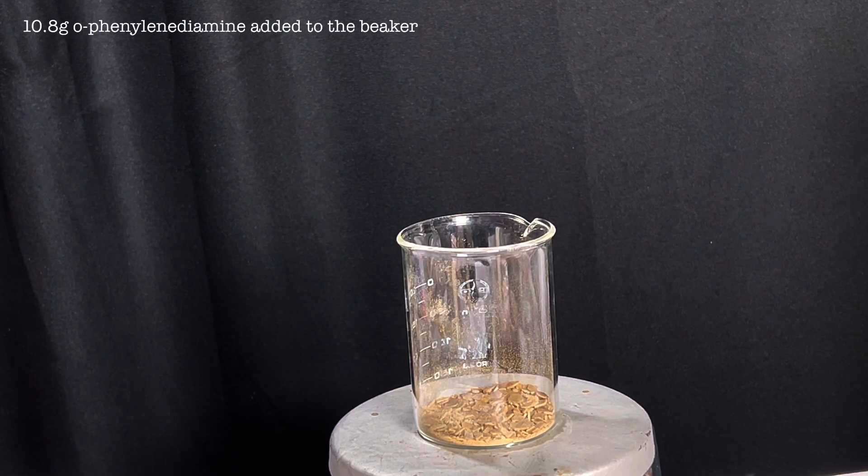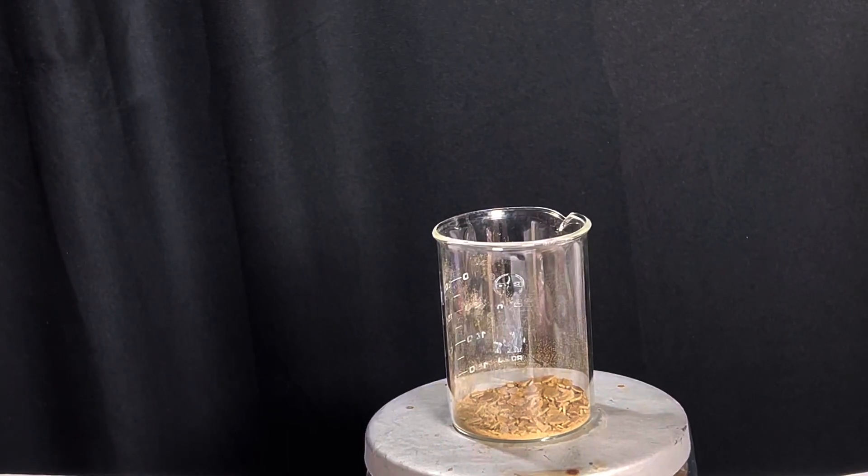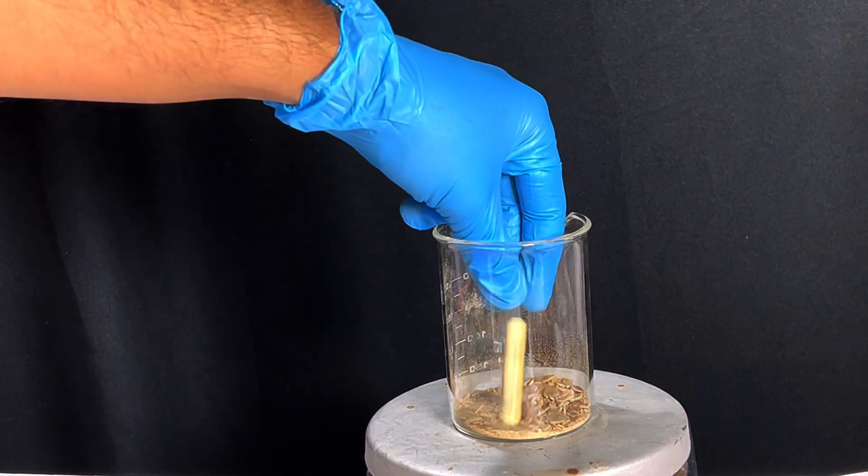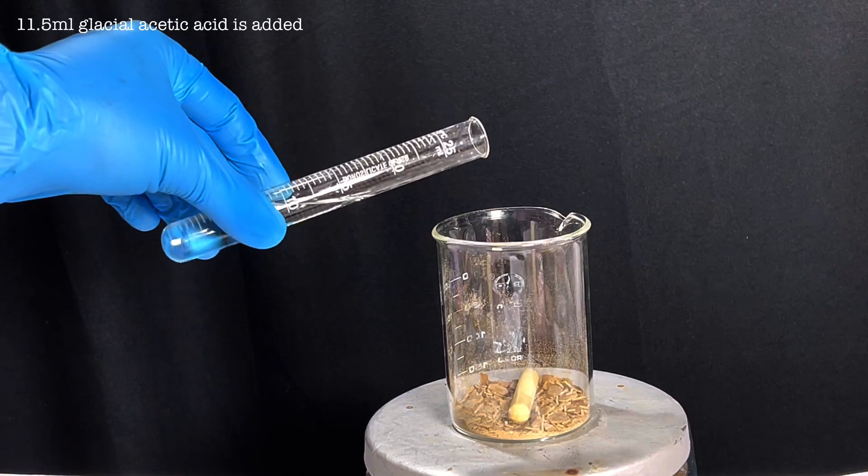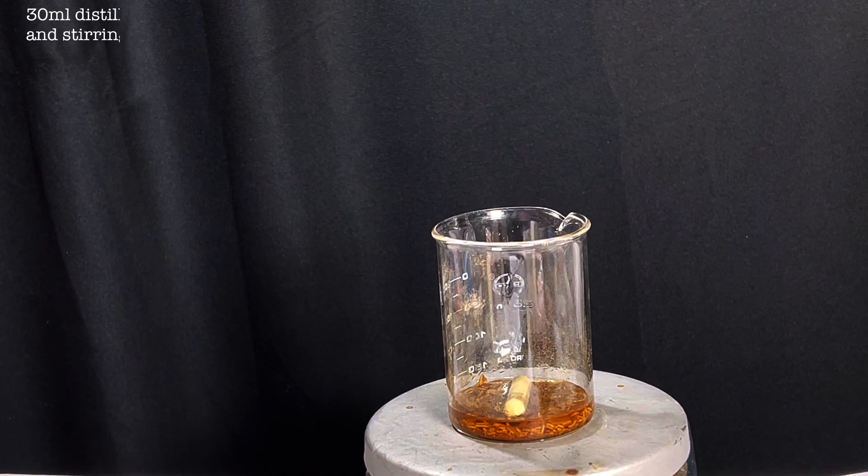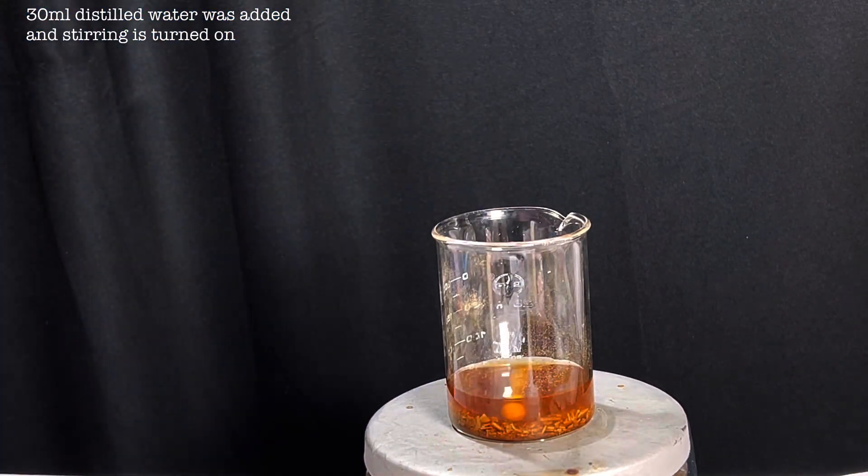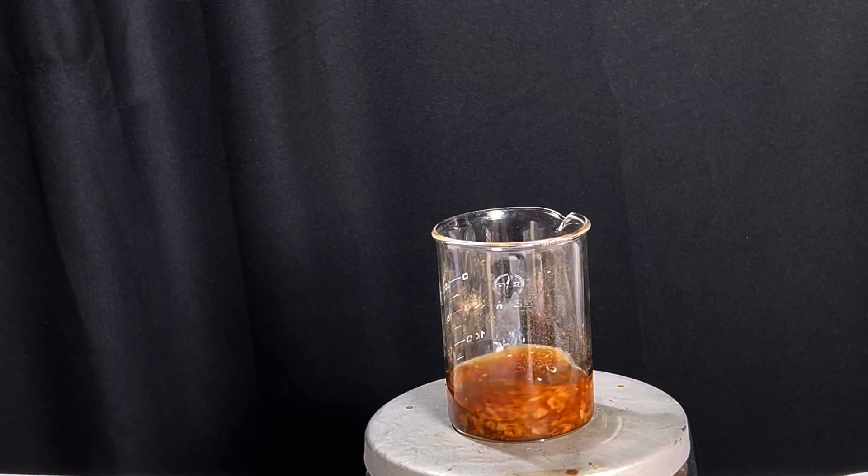Start by taking 10.8 grams of orthophenylenediamine in a 250 milliliter beaker, place a magnetic stirring bar and add 11.5 milliliters of glacial acetic acid to it. Now add 30 milliliters of distilled water and turn on the stirring. Most of the compound should dissolve in the acid.